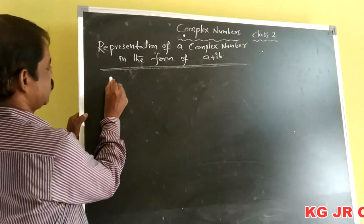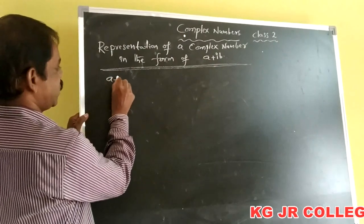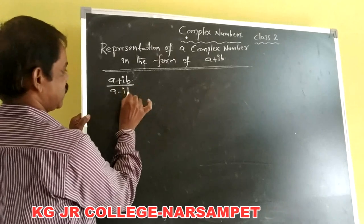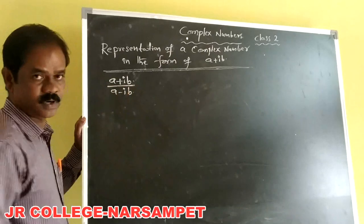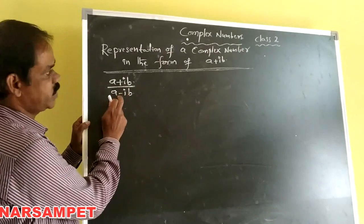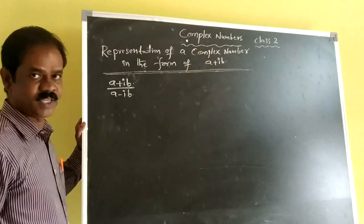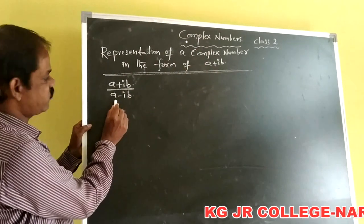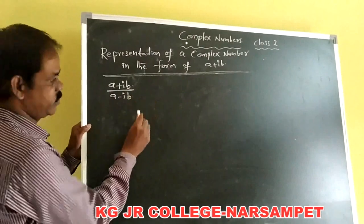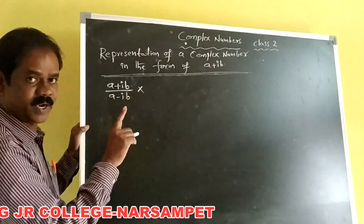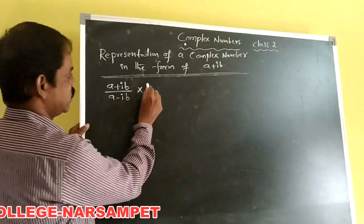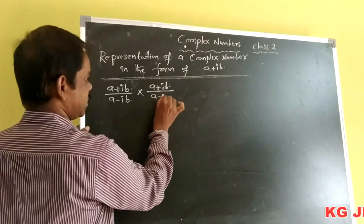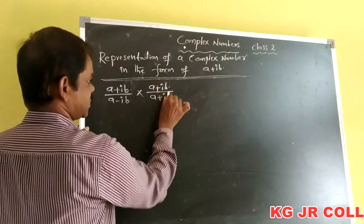Here I am making A plus iB divided by A minus iB. We have to represent this complex number in the form of A plus iB. The rationalizing factor of A minus iB is A plus iB, so we multiply by A plus iB over A plus iB.